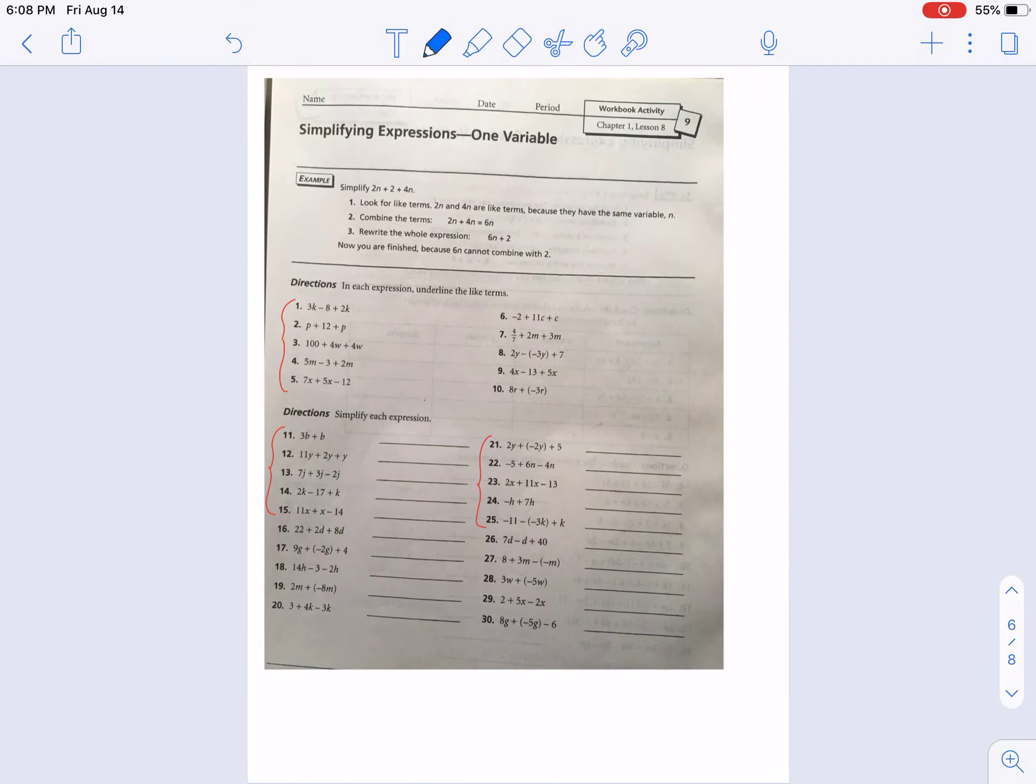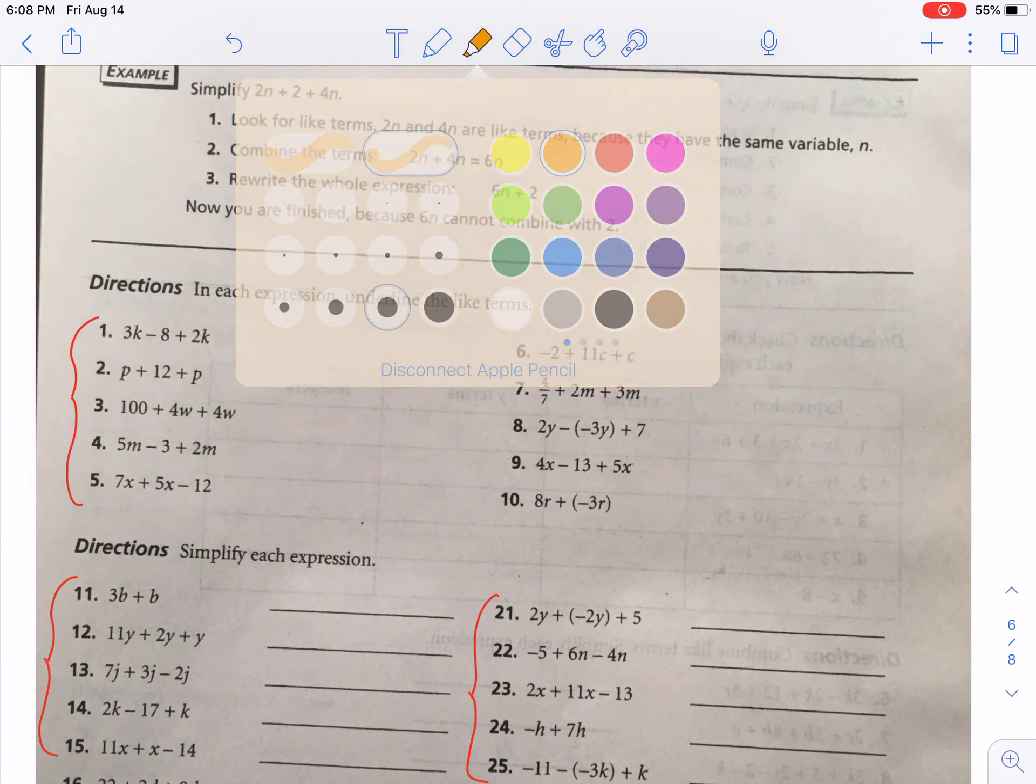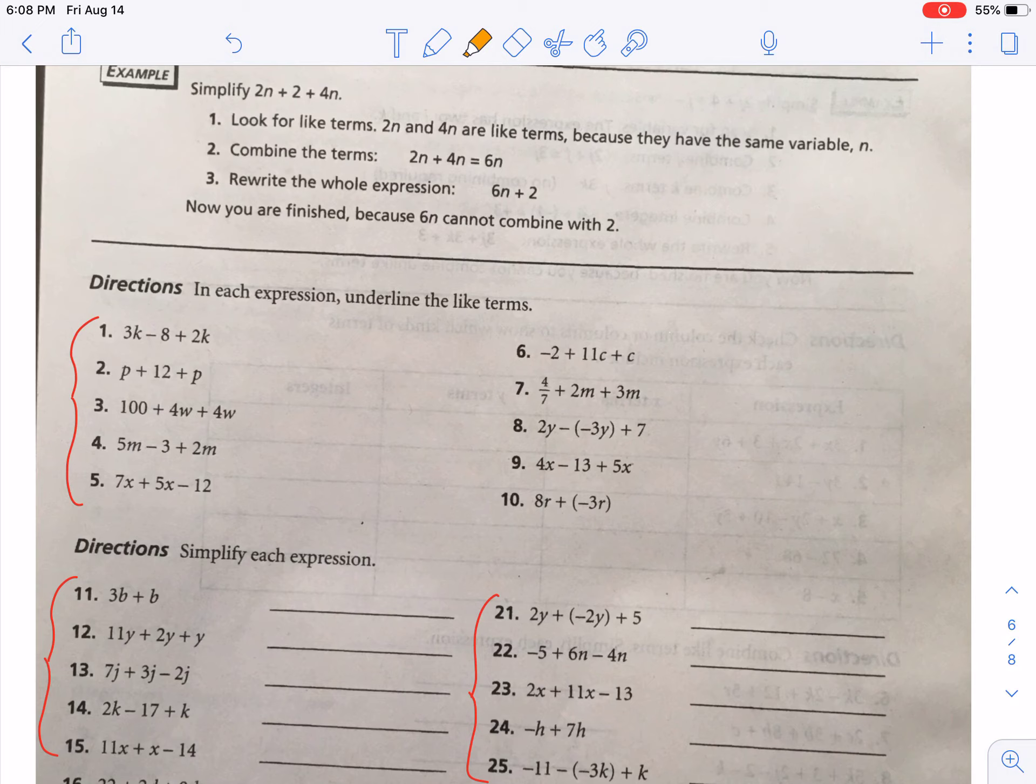Alright, let's do some examples. This first section just tells us to underline the like terms. And I'm actually going to highlight them rather than underlining them. So in the first one, we have a term here that has a k, and then we have another term that has a k. So those are like terms. You can include the sign here with that if you would like. There's an invisible plus in front of the 3k. You can include those if you would like to. Number two, we have two terms that are actually identical. They're both p. Then for number three, we have a 4w and another 4w. So those are also identical.